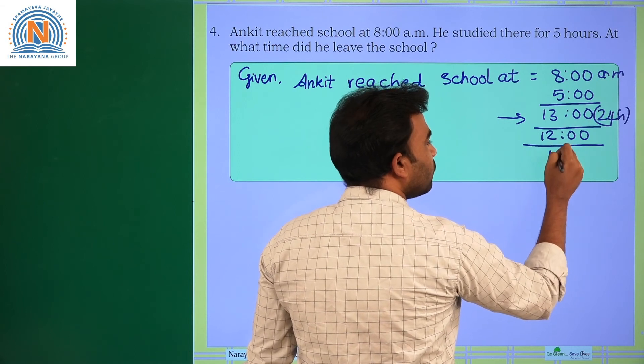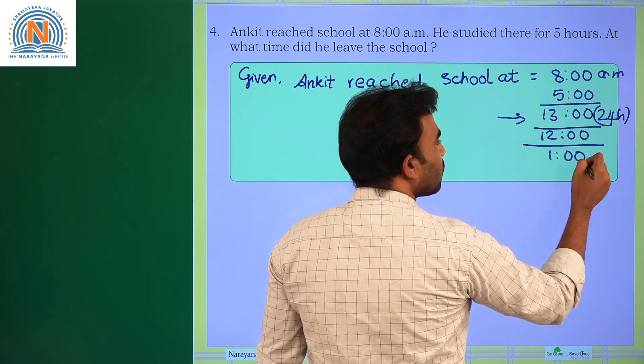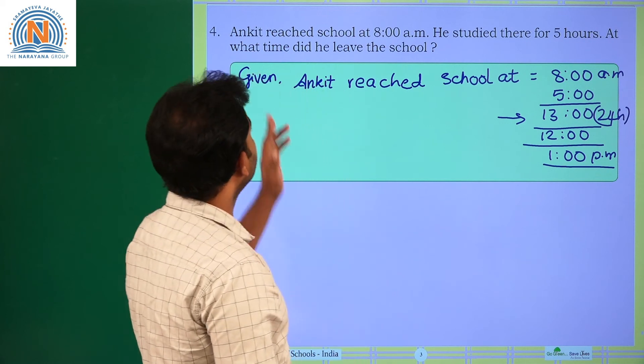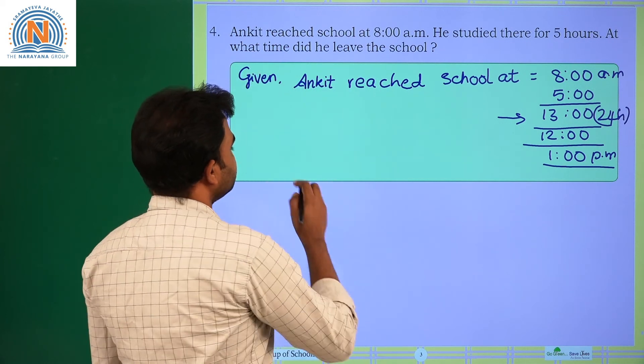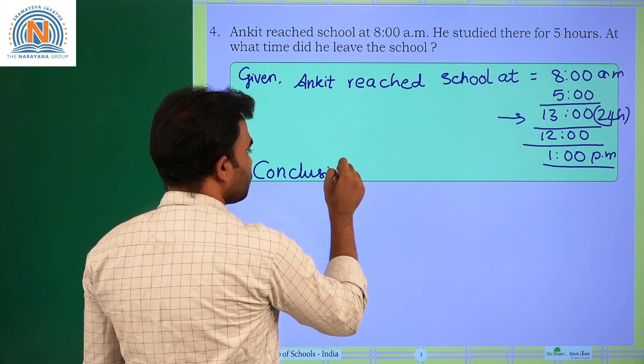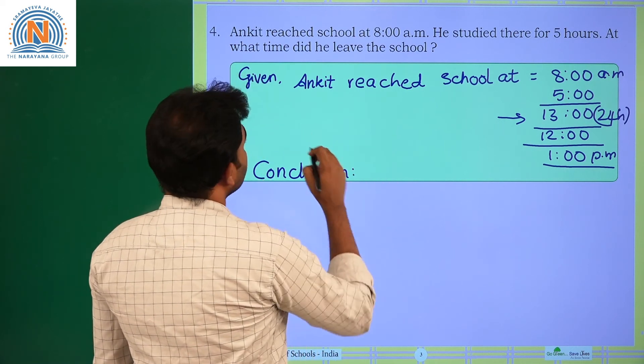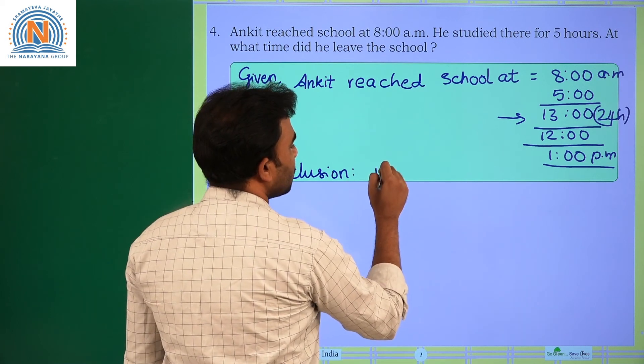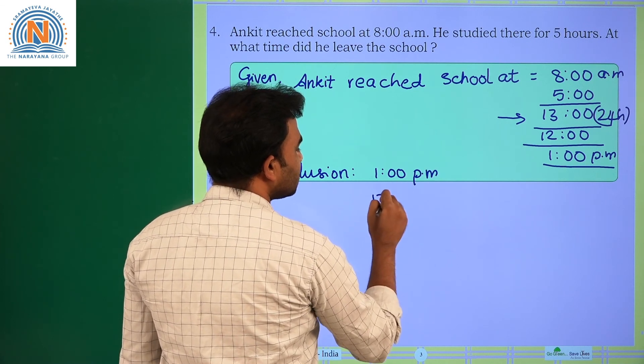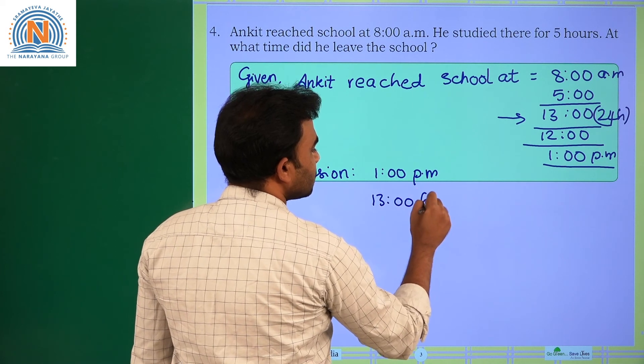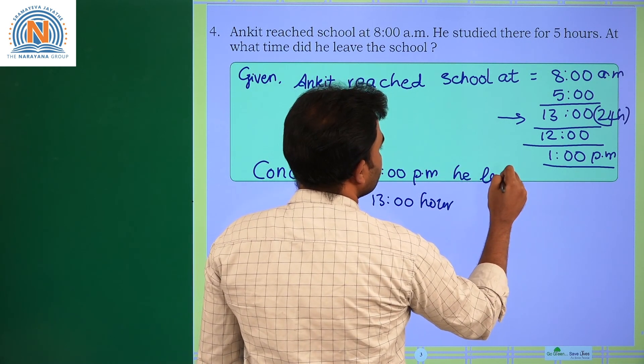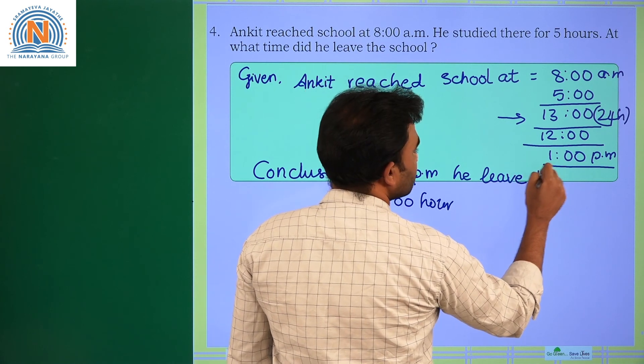13 minus 12, 1. So, at 1 o'clock, that means PM. At 1 o'clock, he leaves the school. So, conclusion: at what time did he leave the school? At 1 o'clock PM, or we can also write it as 13 hours. At 13 hours, he leaves the school.